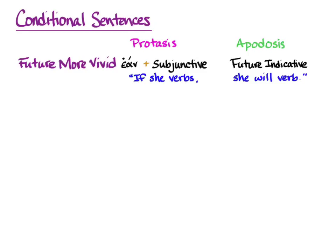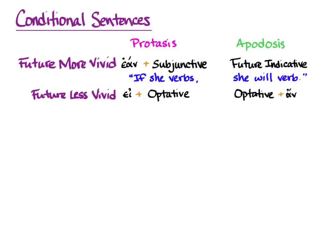Our next pattern is Future Less Vivid — we're going to call this the should-would conditional. It gives a less sure prediction about the future if the condition comes true. We get εἰ plus the optative in the protasis, and again that optative can be present or aorist, and the optative plus ἄν in the apodosis. So εἰ plus the optative, and the optative plus ἄν is Future Less Vivid, and the default translation is: 'if she should verb, she would verb.' The ἄν is just a marker for the conditional type, so you won't translate it separately, but it tells you which way to translate.